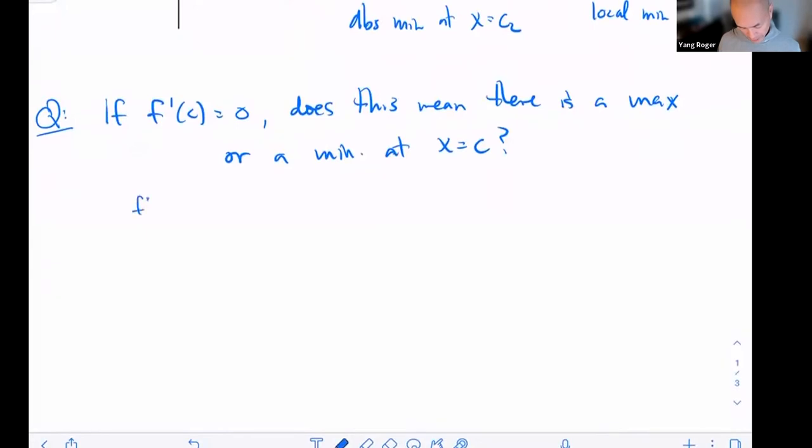Let's take a look at f of x equal to x cubed. When you take the derivative, you're going to get 3x squared. When you set that equal to 0, you're going to get that c is equal to 0.